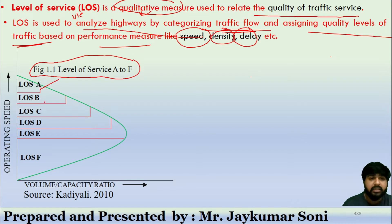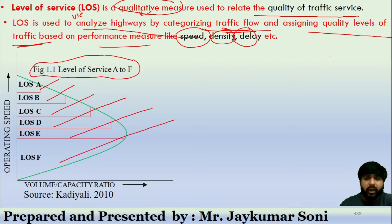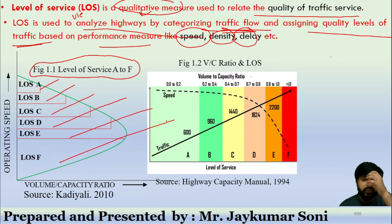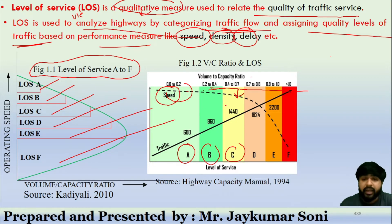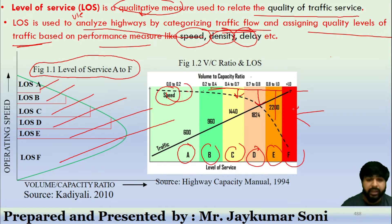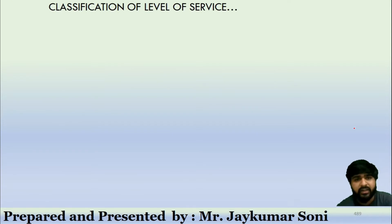The graph shows level of service A through F. In LOS A, higher vehicle speeds are observed. In LOS B, speed is comparatively lower than A. In LOS C, it is lower than A and B. In LOS D, lower than A, B, and C. And in LOS E and F, there is a drastic change in speed. Let us now learn the classification of level of service.